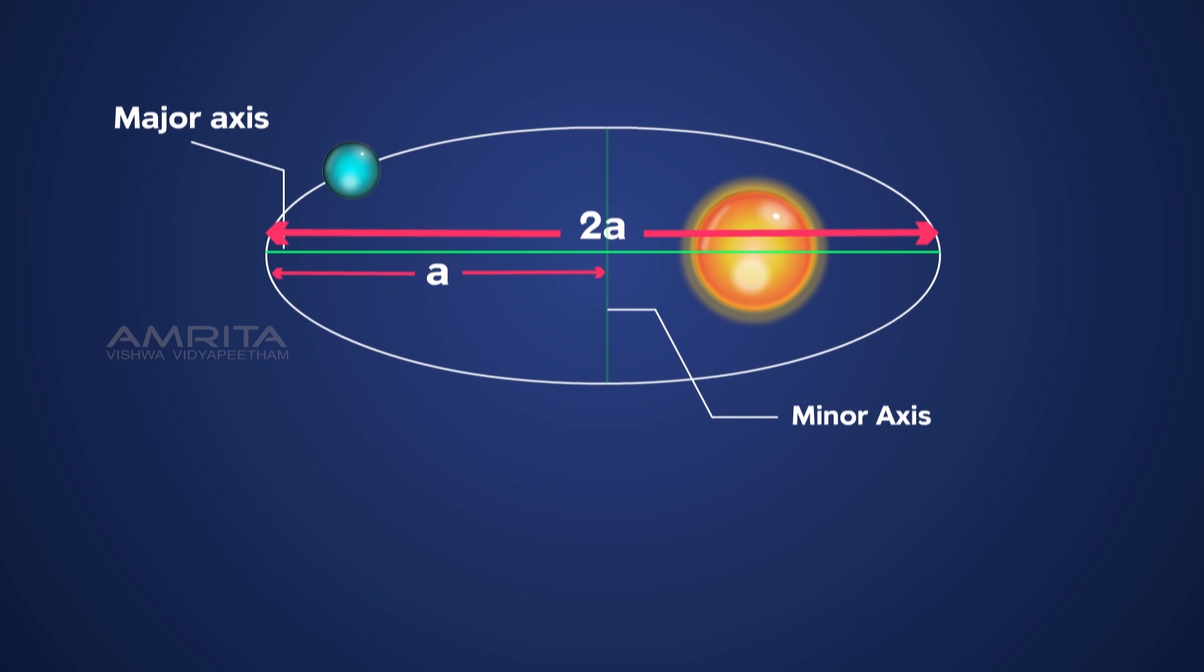According to the law of periods, t square is directly proportional to a cube.